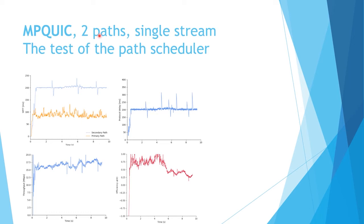For path scheduler evaluation, we observe one stream over two paths with very flat RTT on both paths, very flat protocol delay, acceptable throughput, but unfortunately a decreasing multipath protocol efficiency. Unfortunately, we do not know why this effect appears — it is not always present, but very often, and it requires further research.